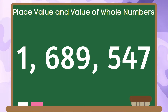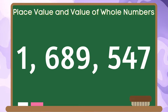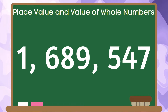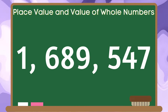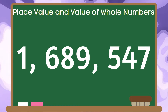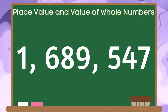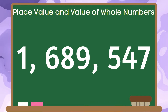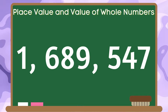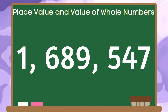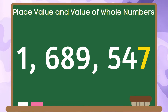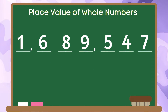For this example, we have 1,689,547. Kung titignan natin mabuti, ang bawat digits sa number na ito ay may kani-kaniyang posisyon na kinalalagyan. Halika! Alamin natin kung ano-ano ang mga ito.